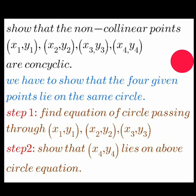We have to show that the four given points lie on the same circle. That is: Step 1, find the equation of a circle passing through the first three points (x₁,y₁), (x₂,y₂), (x₃,y₃). Step 2: